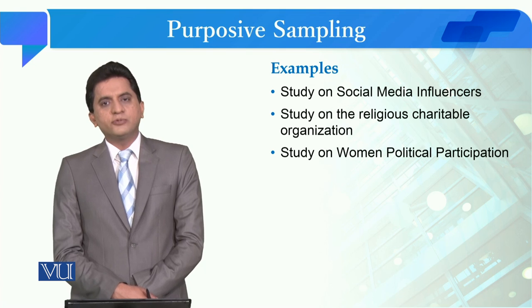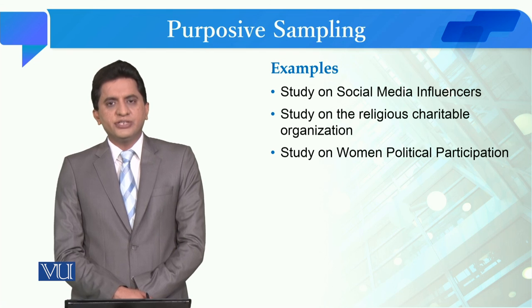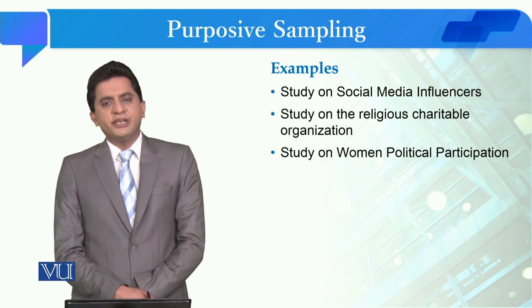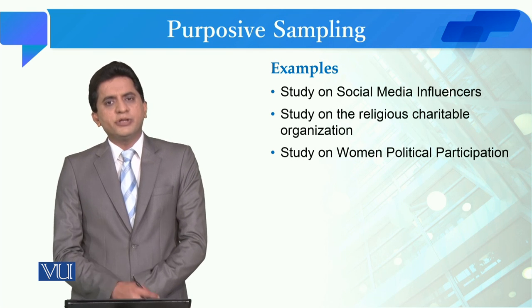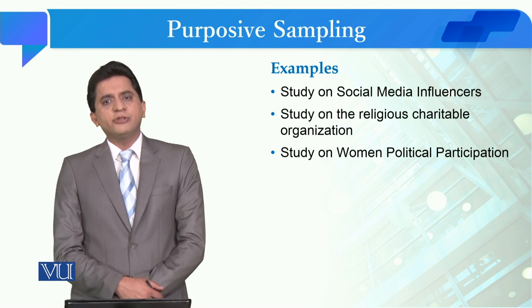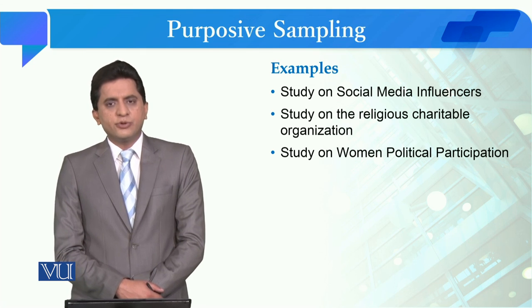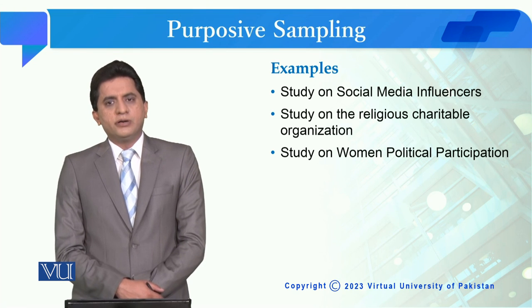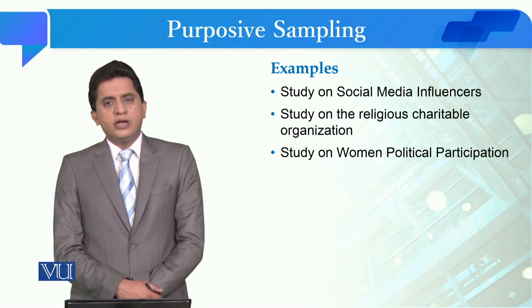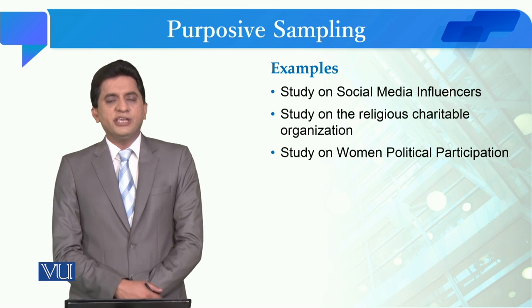Similarly, for a study on religious charitable organizations — since we are a Muslim country with multiple charitable organizations — if you want to study the volunteer behavior of people working in these organizations, you would only take members from those organizations. For a study on women's political participation, you would only include women political activists, women political leaders, or women who are grassroot-level political leaders. This is also a type of purposive sampling.